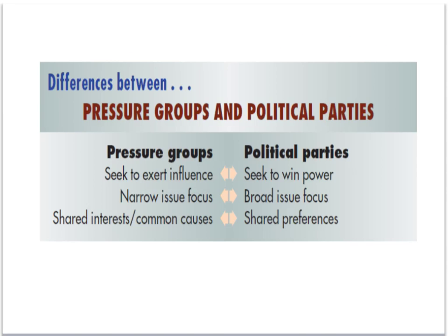There are three main ways in which pressure groups and political parties differ. Firstly, pressure groups seek to influence the government from the outside, whereas political parties seek to win power by putting up candidates in elections. Secondly, pressure groups tend to have a much narrower issue focus, whereas political parties develop manifestos encompassing a broad range of issues. Finally, pressure group members may share little in common apart from commitment to one issue, whereas political party members tend to share preferences across a range of issues.